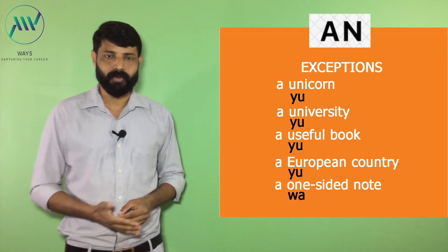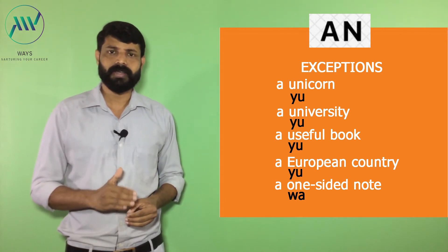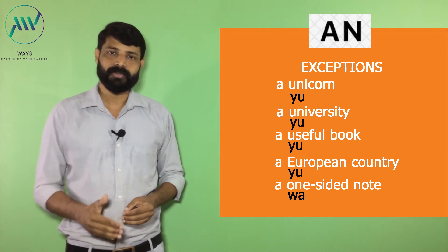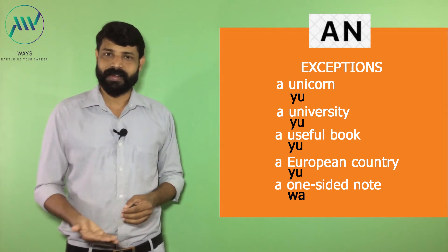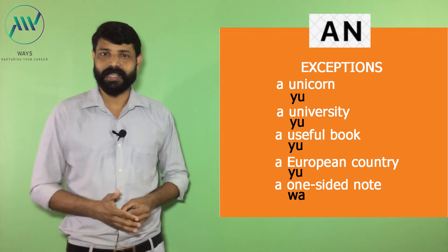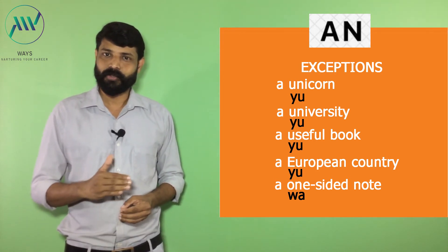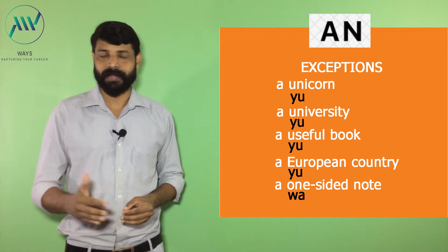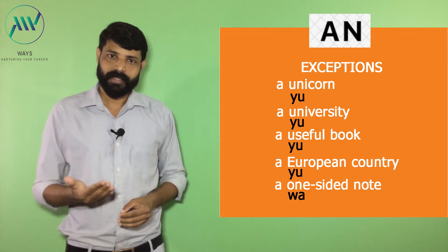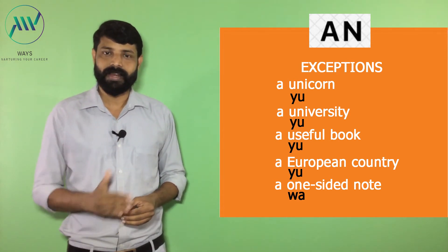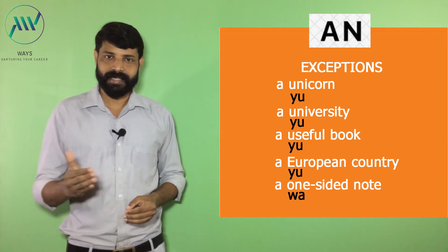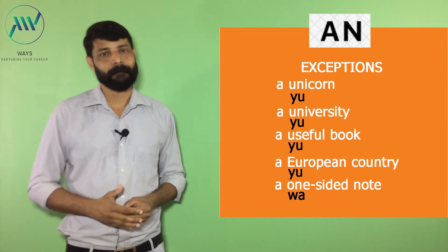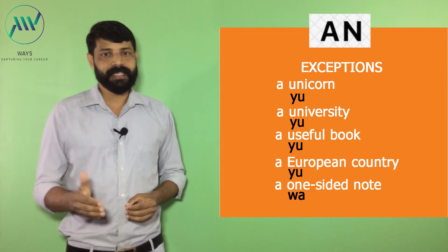'A useful book' also follows the same rule — it starts like 'yu,' a consonant sound, so we use article A. 'A European country' — there is a vowel letter at the beginning, but it sounds like a consonant: 'yu,' so we use article A. 'A one-sided note' — here also there is a vowel letter, but it sounds like a consonant: 'w,' so we use article A.